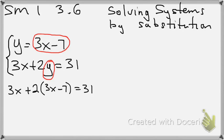So now what I'm going to do is distribute the 2. So I'm going to get 3x plus 2 times 3x, 6x, 2 times negative 7, negative 14, equals 31.